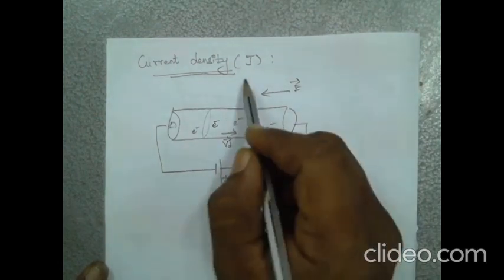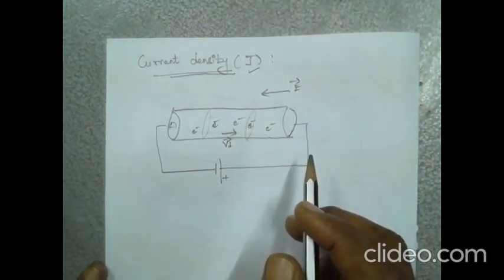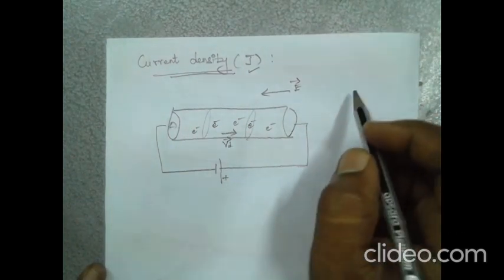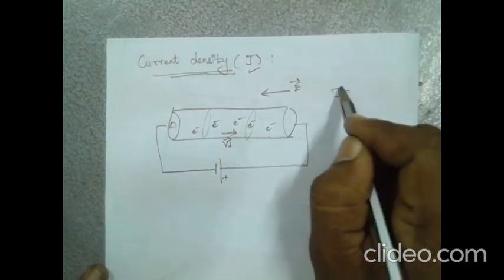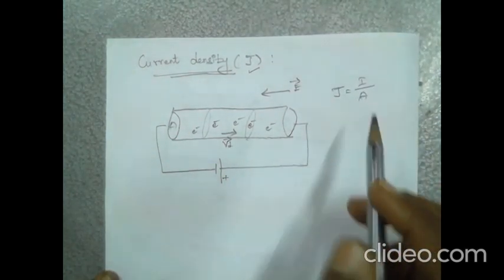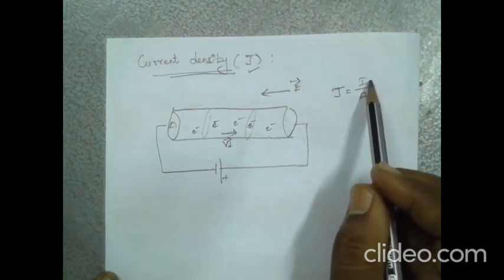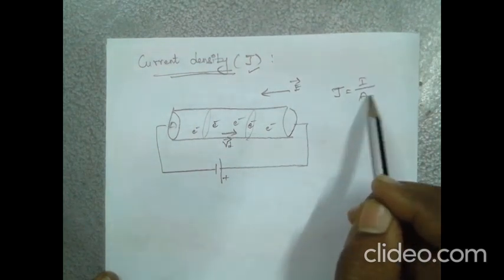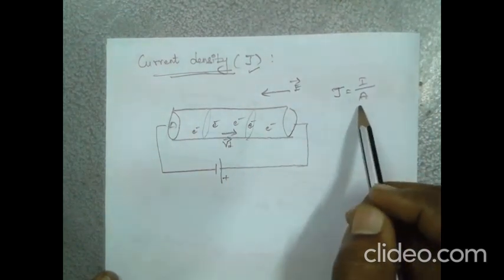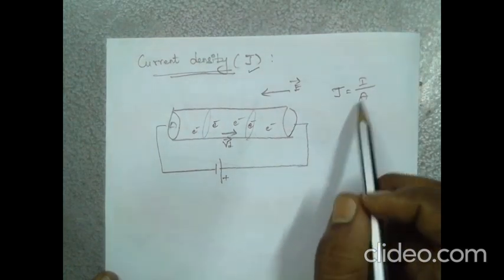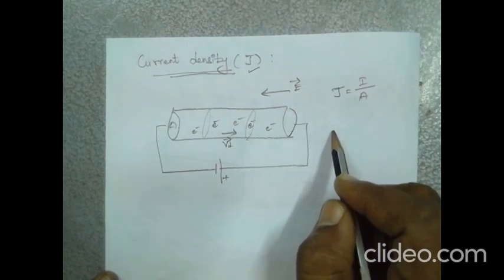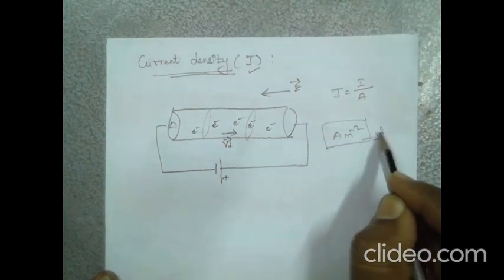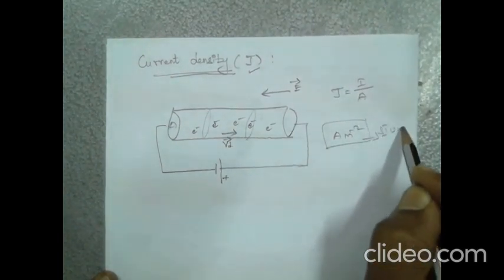The next topic is current density, represented by J. Current density is defined as the current per unit area of cross-section of a conductor. The equation is J equals I divided by A. The SI unit of current density is ampere per square metre.